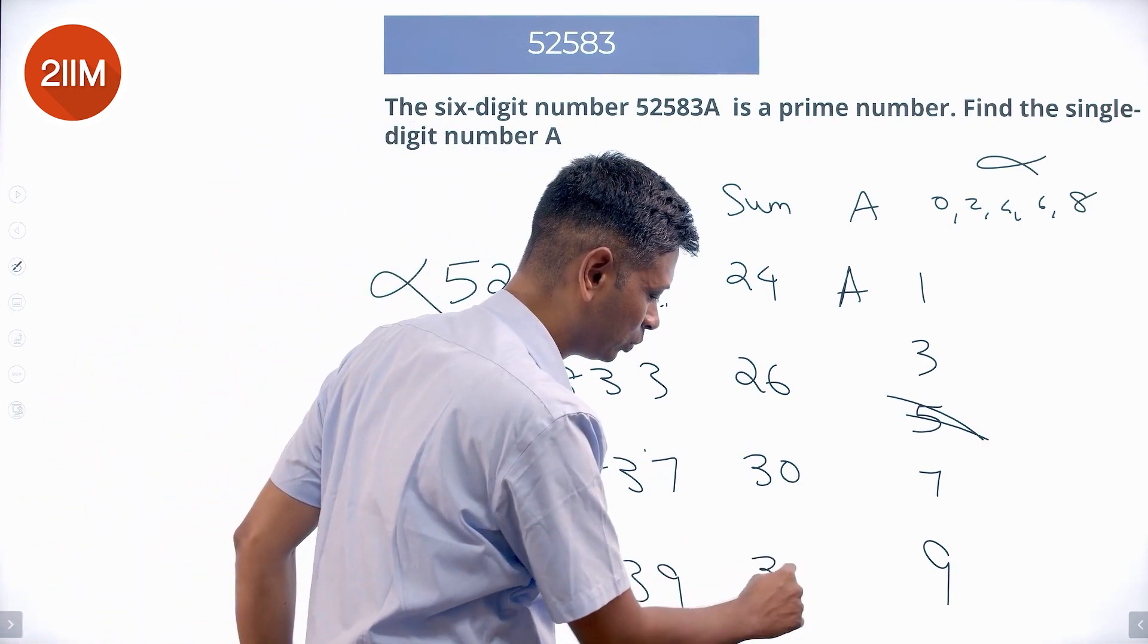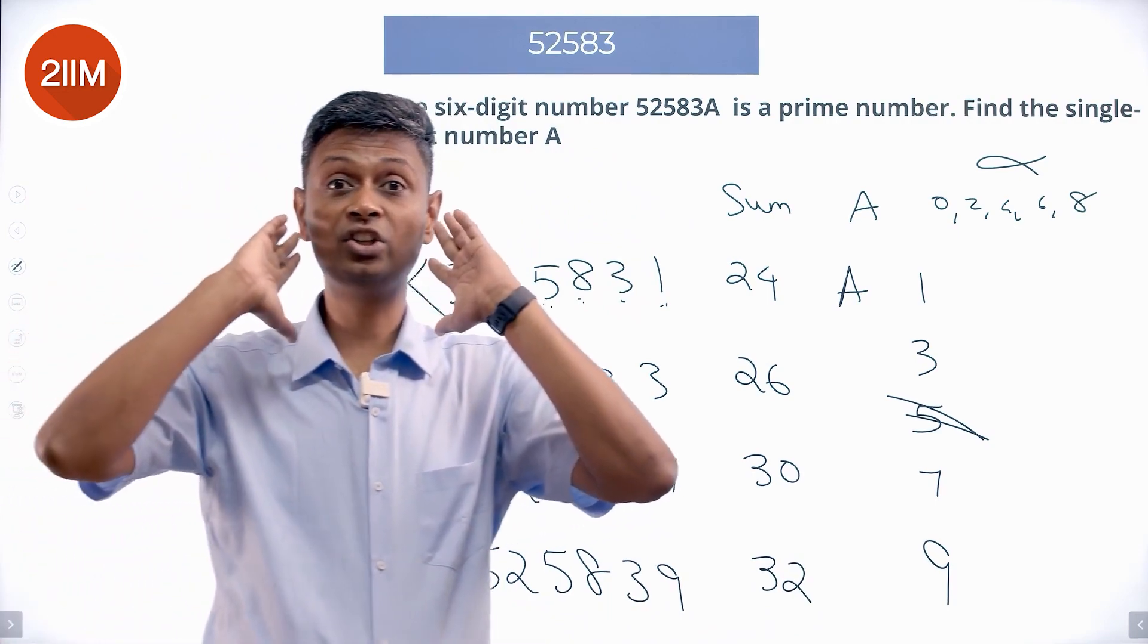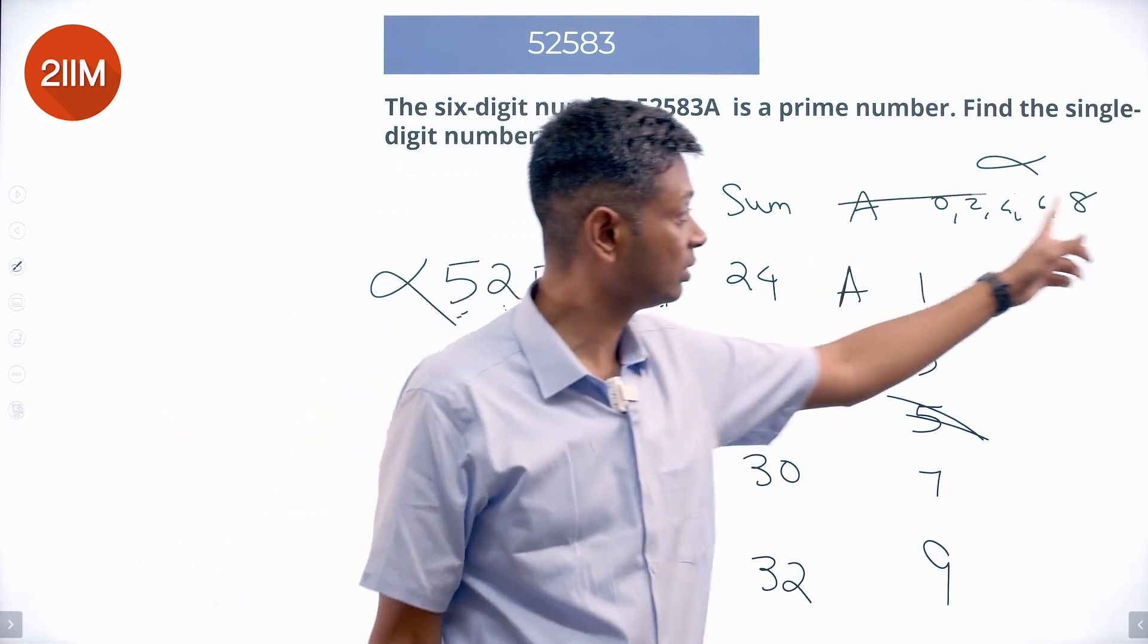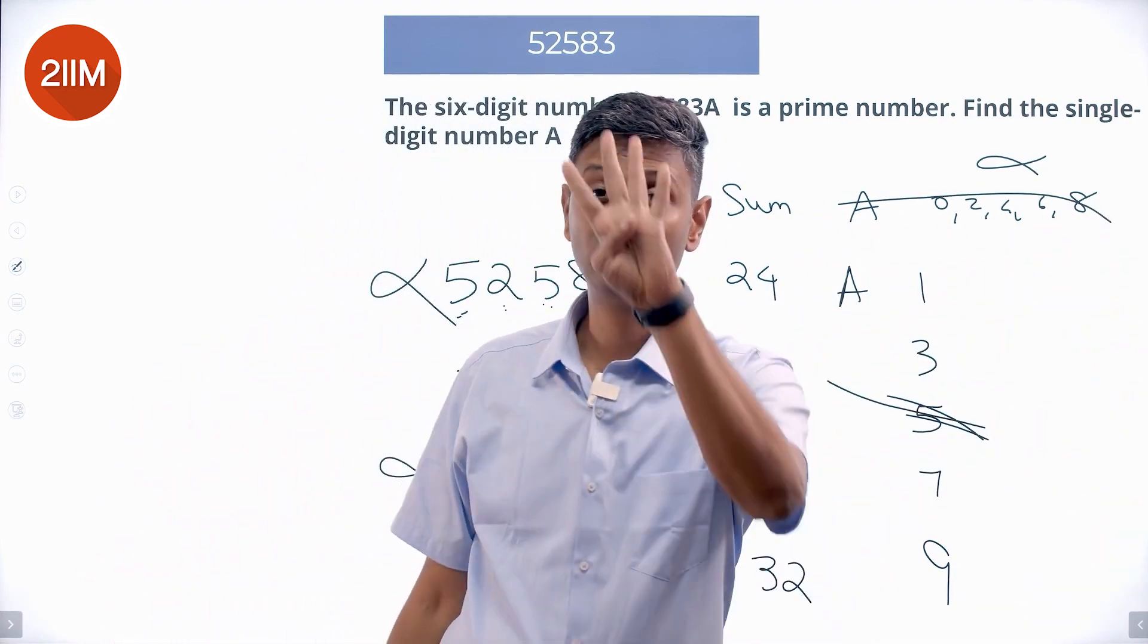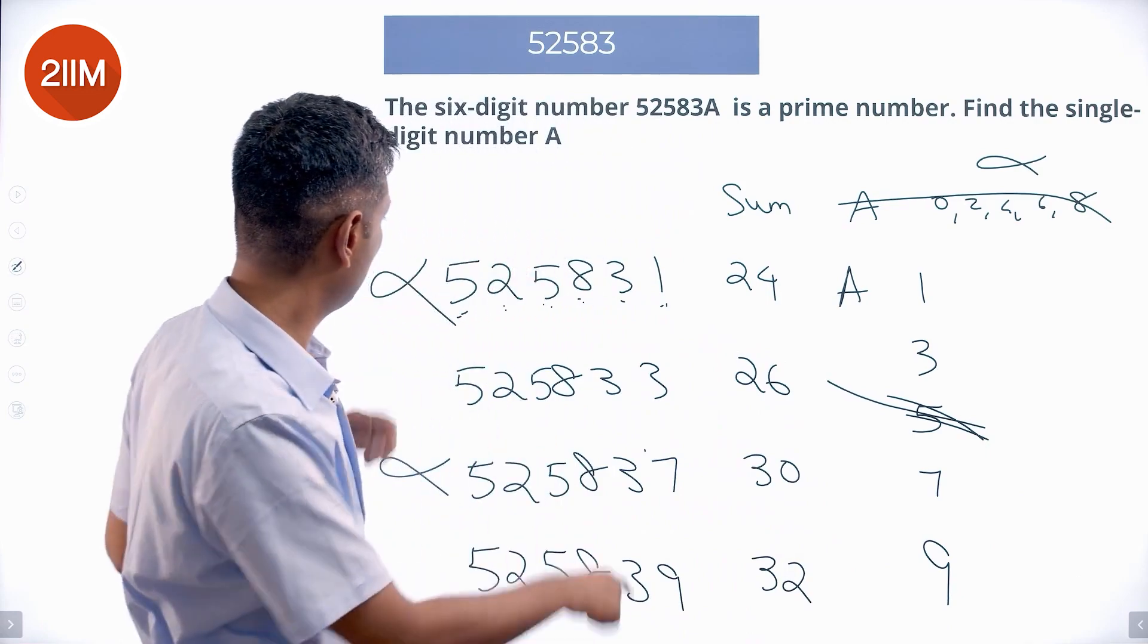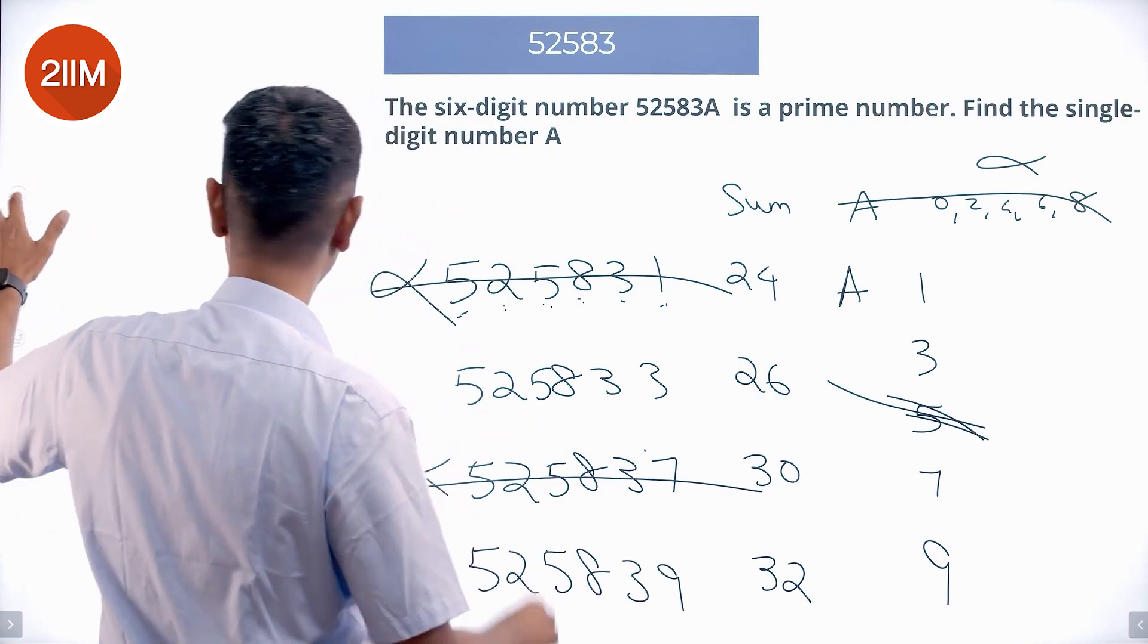This will be 32. Straight away: first thing I had, A is a digit 0 to 9. 5 went off, I have only 5 remaining. This went off, I have only 4 remaining. These two are multiples of 3, so I have only 2 remaining: 525833 and 525839.